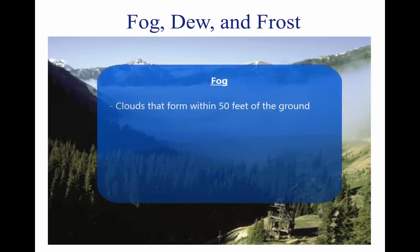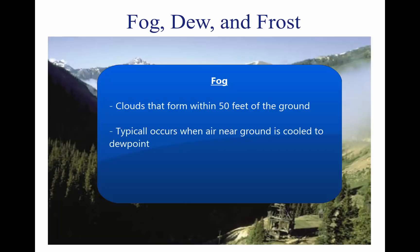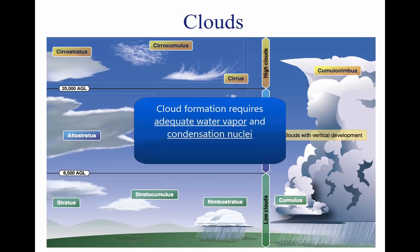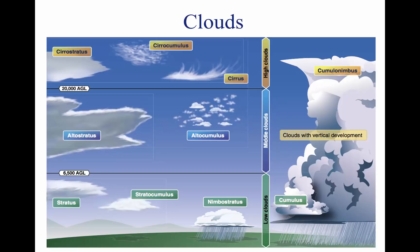Fog is a cloud that begins within 50 feet of the surface. It typically occurs when the temperature of air near the ground is cooled to the air's dew point. Clouds are visible indicators and are often indicative of future weather. For clouds to form, there must be adequate water vapor and condensation nuclei, as well as a method by which the air can be cooled. When the air cools and reaches its saturation point, the invisible water vapor changes into a visible state through the processes of deposition, also referred to as sublimation, and condensation. Moisture condenses or sublimates onto minuscule particles of matter like dust, salt, and smoke, known as condensation nuclei.